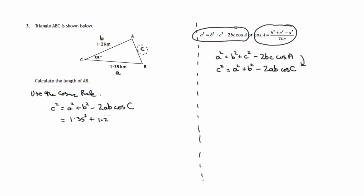Little a is 1.35, so there's 1.35² + little b is 1.2, so 1.2² - twice a times b, 1.35 × 1.2 × the cosine of angle c, and angle c is 35 degrees. So this calculation here will give us c².